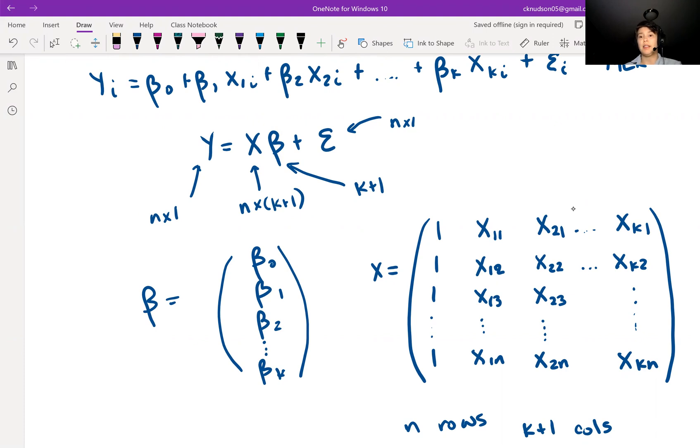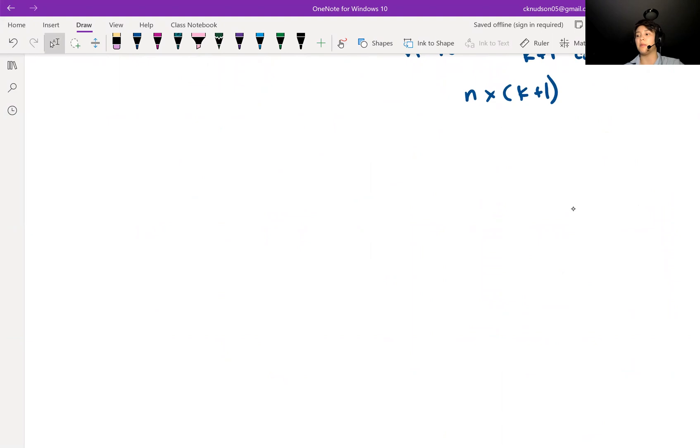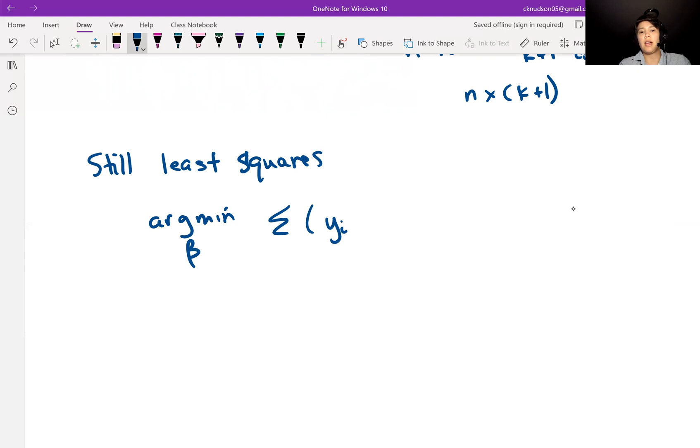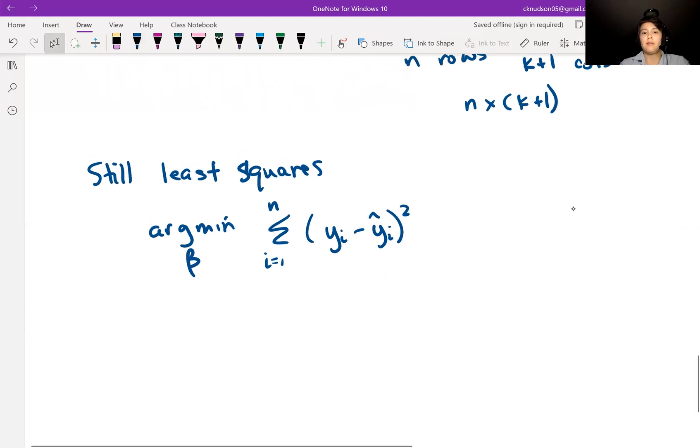Now let's think about how do we find beta? How do we find an estimator for beta? We can still use least squares. And remember, in least squares, we were looking for the value of beta that would minimize the sum of the residuals, yi minus yi hat squared. So we wanted to minimize those residuals. And the betas are hidden in here. So we can rewrite this as the sum of yi minus...